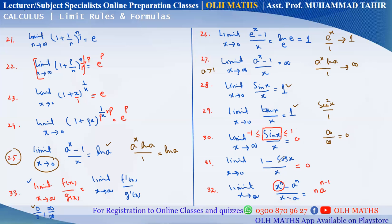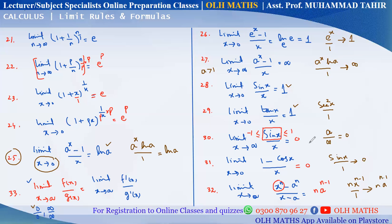For limit (1 − cos x)/x as x→0: 1 − cos 0 = 0, so 0/0 form. Derivative of (1 − cos x) is sin x. Derivative of x is 1. Limit x→0: sin 0 = 0. So the answer is 0.